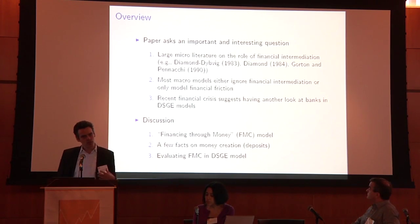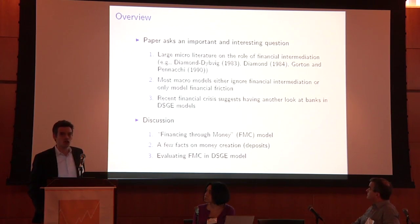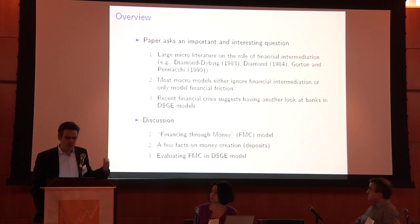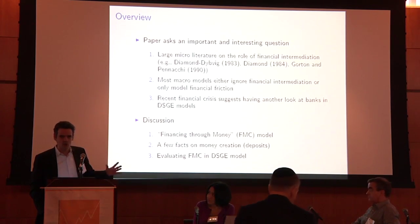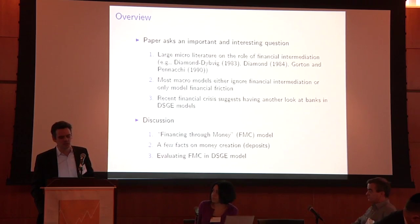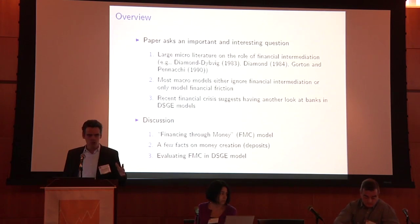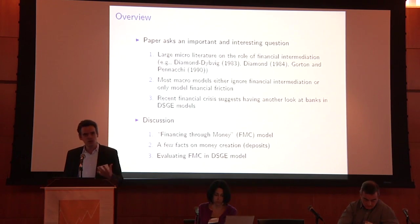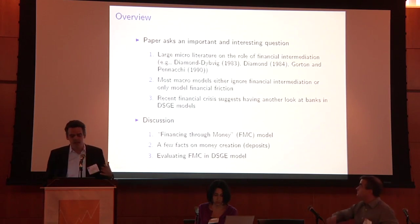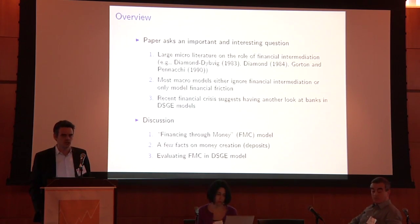In some sense, there is already a very large literature on understanding financial intermediation — but that's mostly in microeconomics. Classical papers include Diamond-Dybvig on bank runs, Diamond on delegated monitoring, Gorton-Pennacchi on why we have deposits. There's a vibrant literature that's not cited in the current draft of the paper, and I think it would be important to bring some of these in. In macro, most models either ignore financial intermediation altogether, or if they do model it, it's usually through a financial friction. In macro now, there's a reevaluation of this — trying to understand whether bringing banks into these models helps us do better policy analysis.